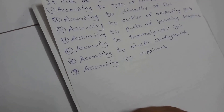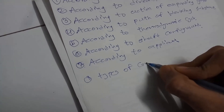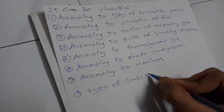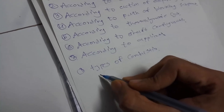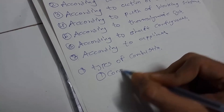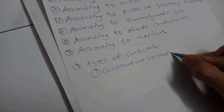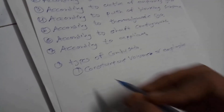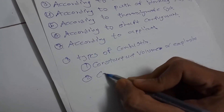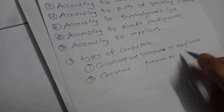Let's start with classification according to types of combustion process. There are two types of combustion process that can happen in a gas turbine. The first one is constant volume combustion, also called explosion-type combustion. The second one is constant pressure combustion, also called continuous combustion.